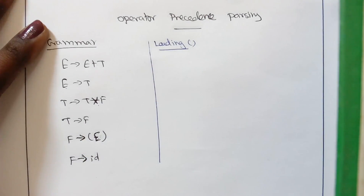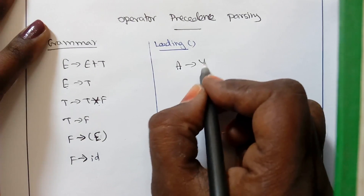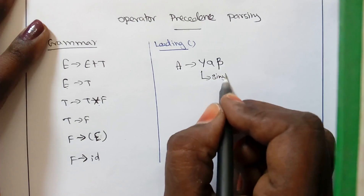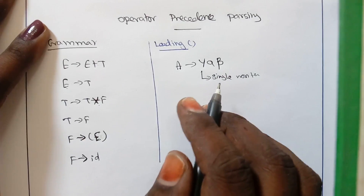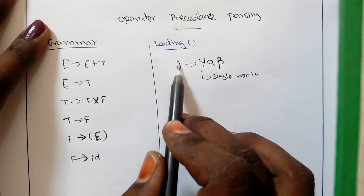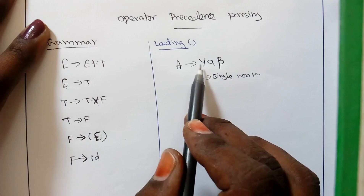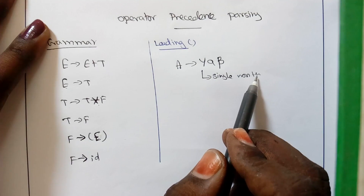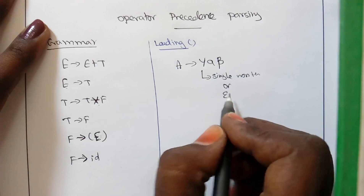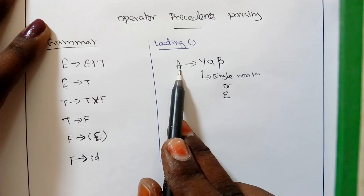For finding the LEAD of a variable, the first rule is: when you have a production of the form A → Y... where Y is a single non-terminal or variable, we have to add the next terminal symbol to the LEAD of A. So whenever a production starts with a single non-terminal, we add the next terminal symbol to the LEAD of that variable.